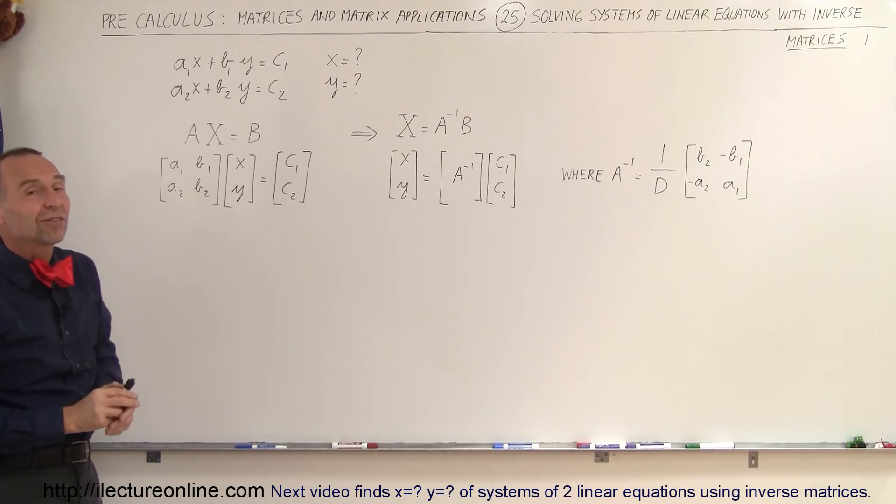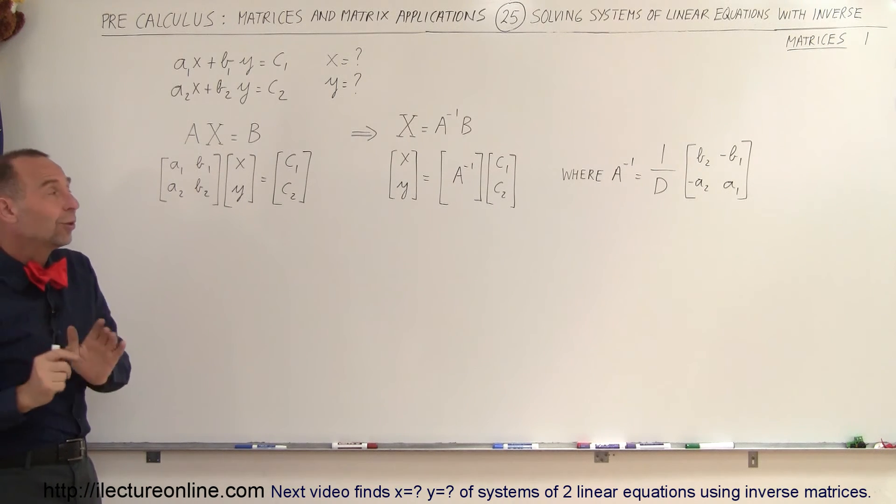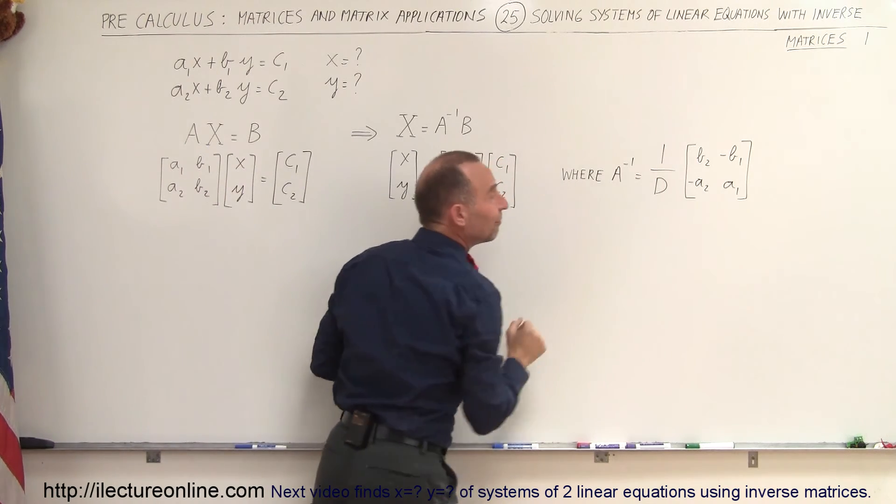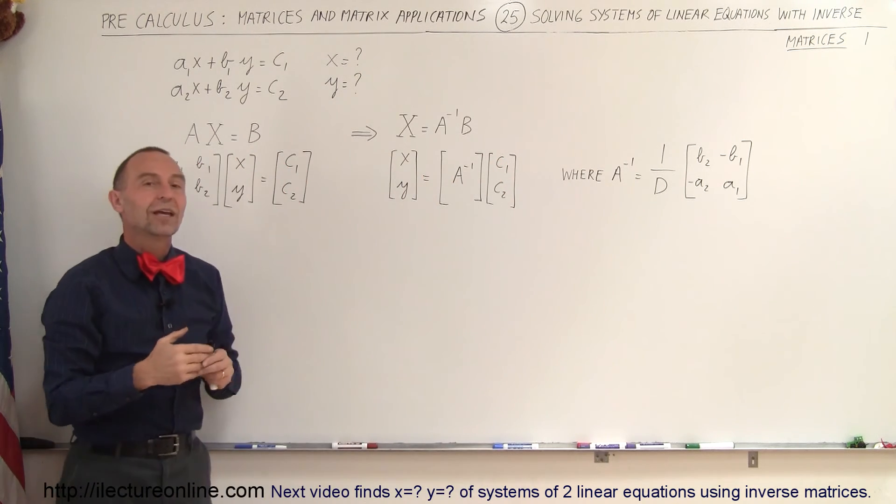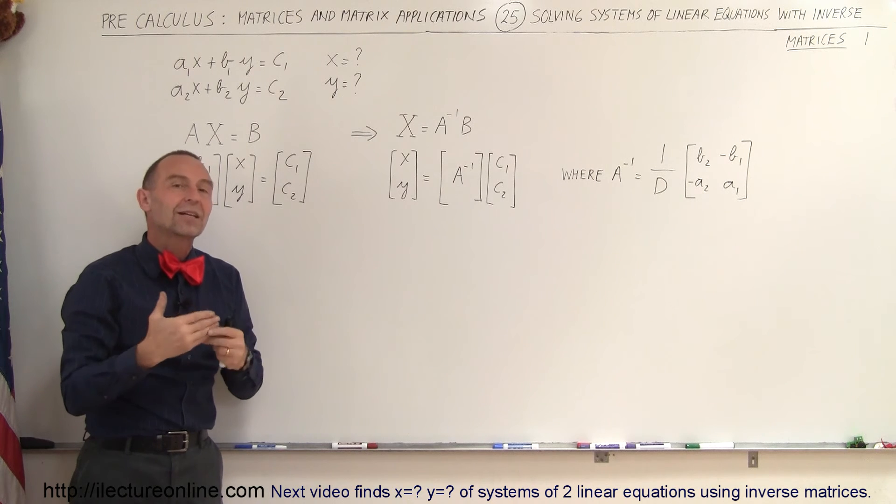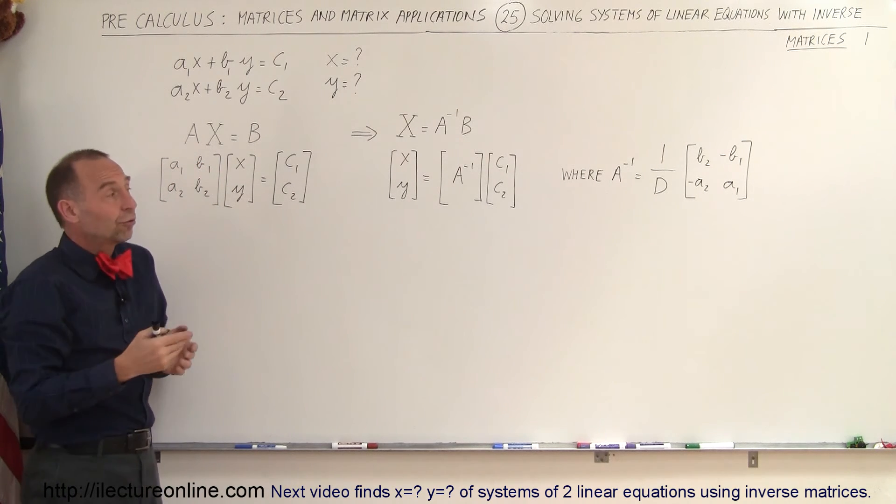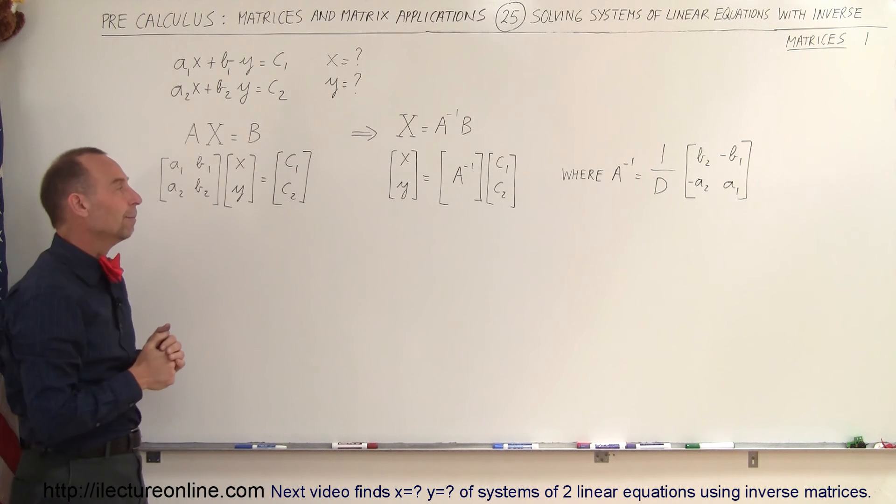Now, what if we have a three by three instead of a two by two? The method still works. The difference is we can no longer use this simplified method to find the inverse and we'll then have to use the augmented matrix and the Gaussian elimination method to find the inverse of the matrix, which of course also works for a two by two if you like the technique better.